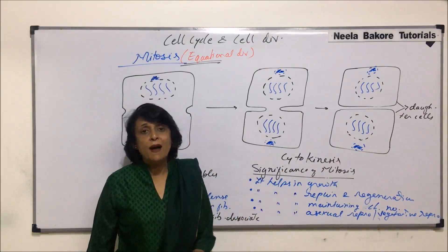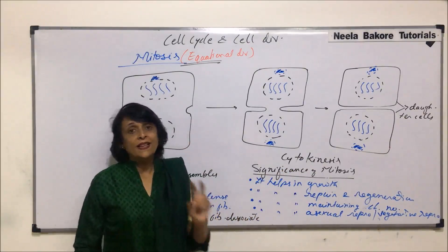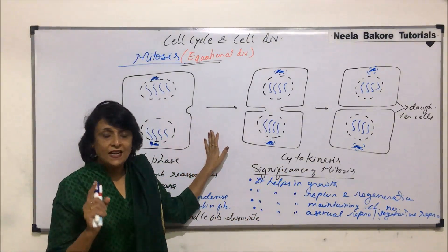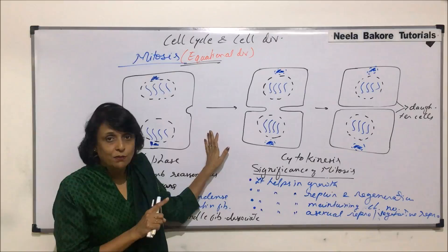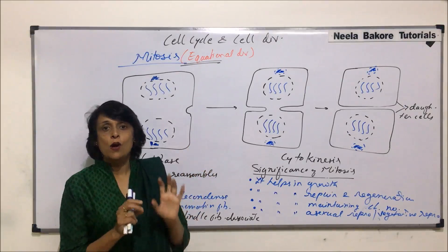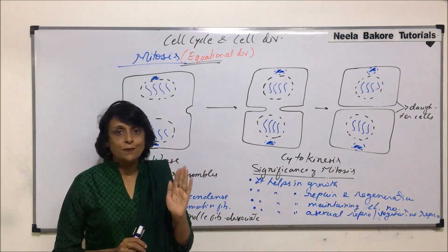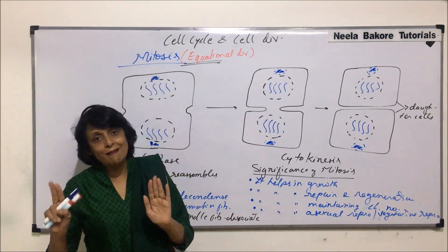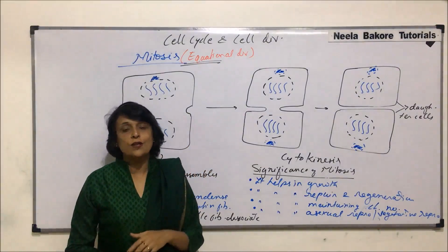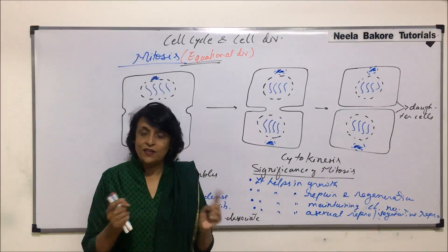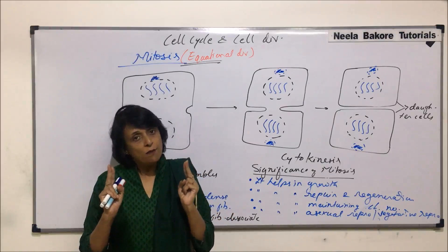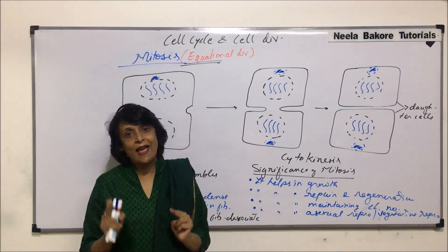After discussing the significance of mitosis, we will talk about a comparison. We started with an animal cell, and now we need to understand how mitotic division in an animal cell and a plant cell differ from each other. In the next segment, we will compare this same type of division taking place in animals and plants.